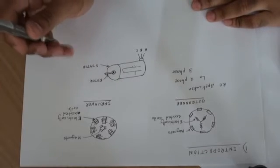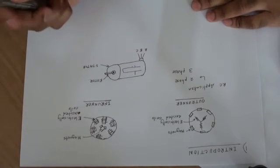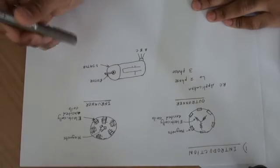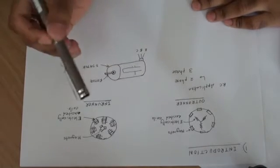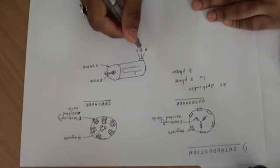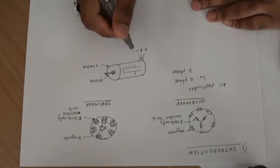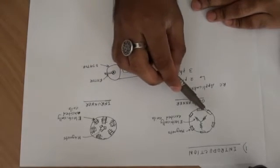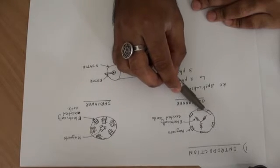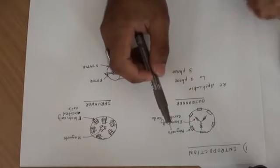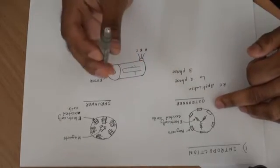So unlike the brushed motors, the cheaper RC toy car motors that you see, with these pins you can't just apply voltage, constant DC voltage across these pins and expect the motor to run, because it won't.